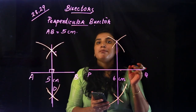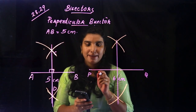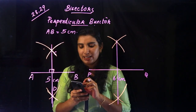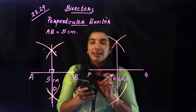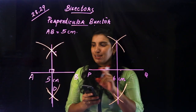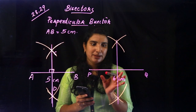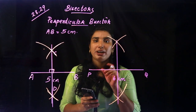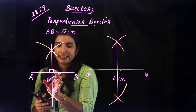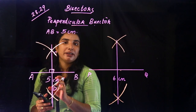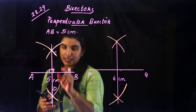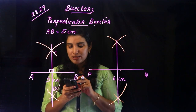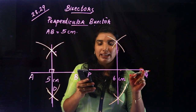We are now here. Perpendicular bisector — we will draw perpendicular to a line. We are here at 90 degrees. This is a perpendicular bisector because we are perpendicular and bisector. This is the midpoint — this is the center of AB. This is the perpendicular bisector.